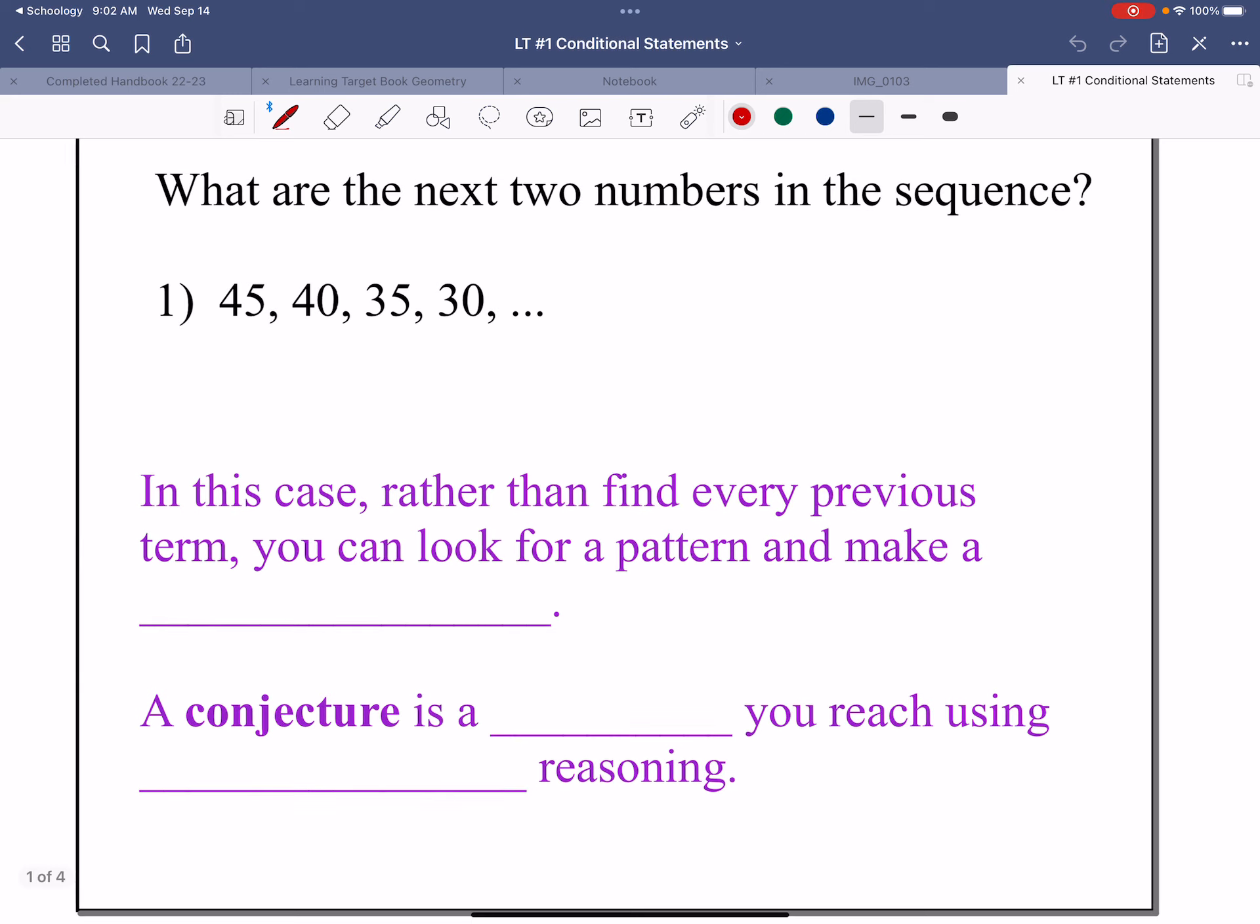You can quickly see that the next two numbers would be 25 and 20 because you notice a pattern. You're subtracting 5 each time. In this case, rather than find every previous term, you can look for a pattern, which we did, and make a conjecture.